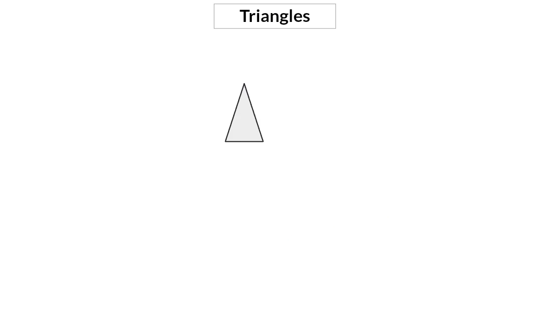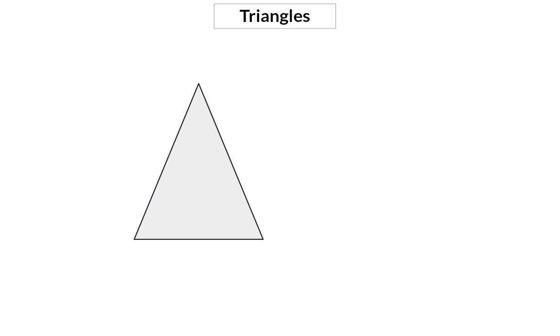A triangle consists of three angles and three sides. When classifying triangles we can have a look at the angle sizes or the side lengths.